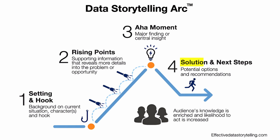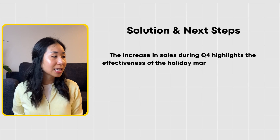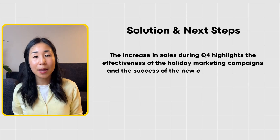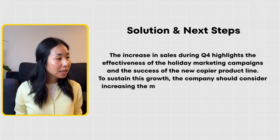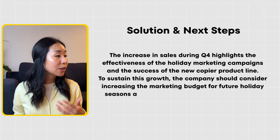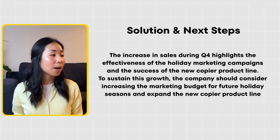The next step is solution and next steps, where I answer the 'so what' — taking your insights and making them into action. The increase in sales in Q4 highlights the effectiveness of the holiday marketing campaign and the success of the new copier product line. To sustain this growth, the company should consider increasing the marketing budget for future holiday seasons and expanding the new copier product line. And that's how I would create a narrative around the problem of how is sales performing for a company.